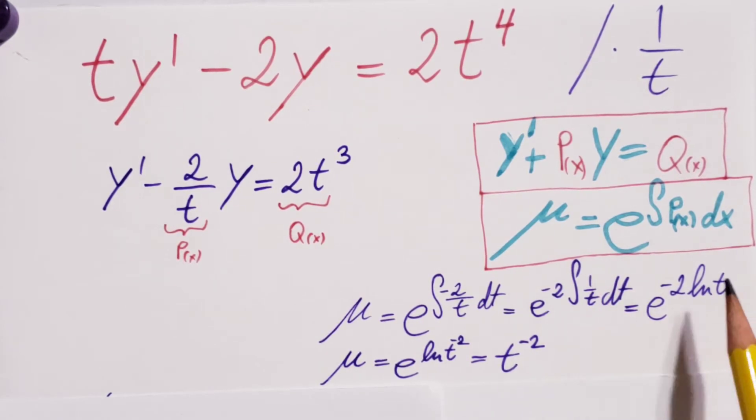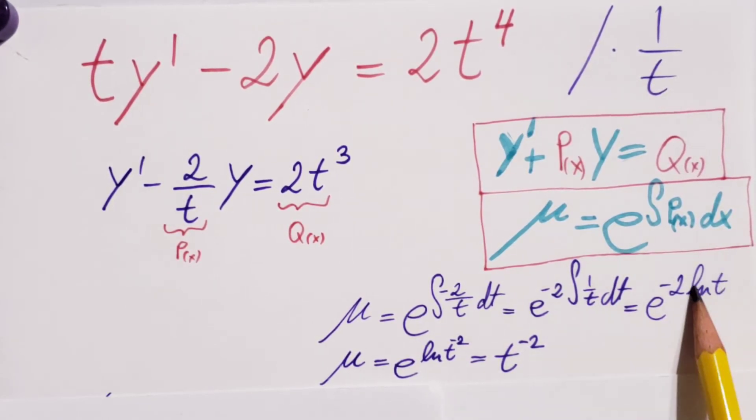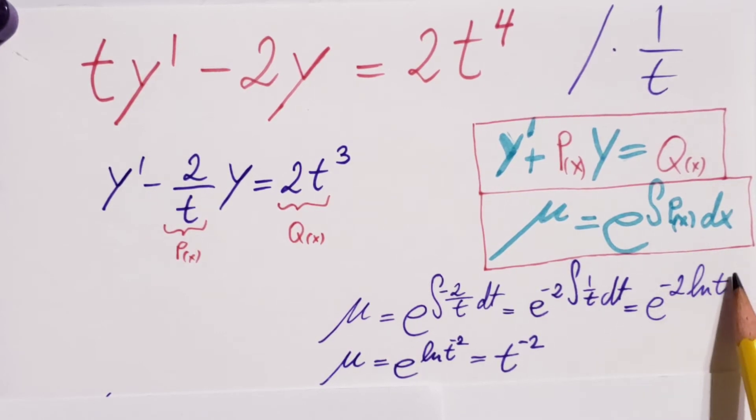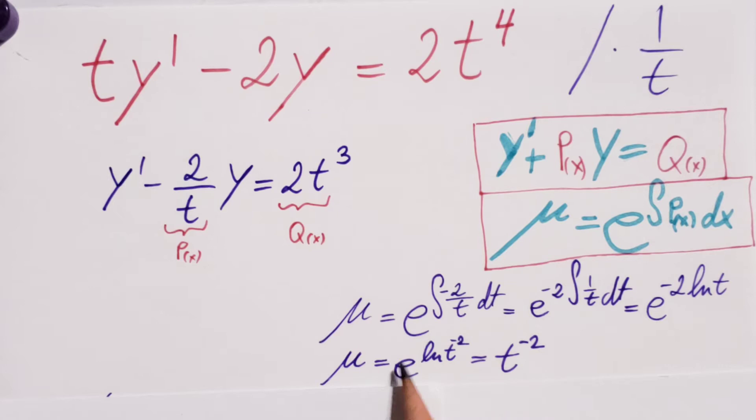Integral of 1 over t is ln of t. And solving this, the negative 2 jumps on top of the t. And e and ln cancels each other. So therefore, my integrating factor is t to the negative 2.